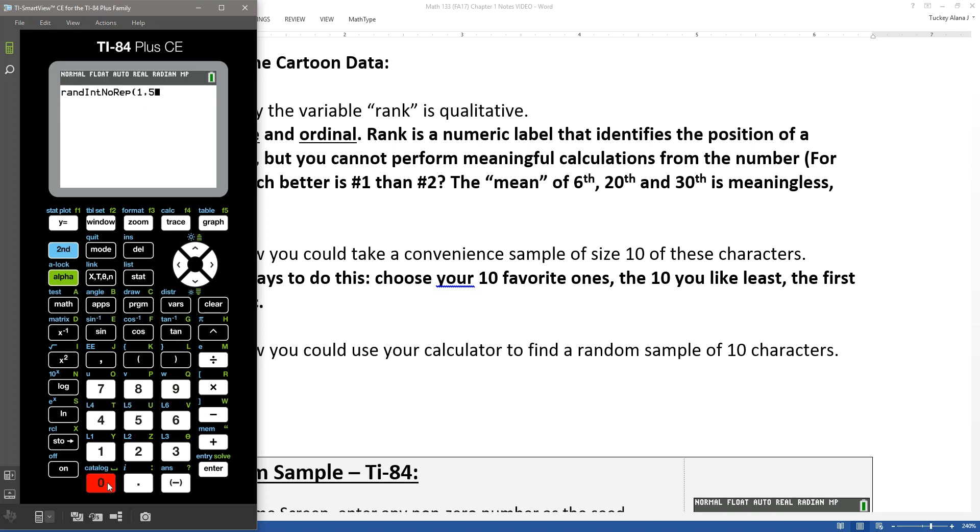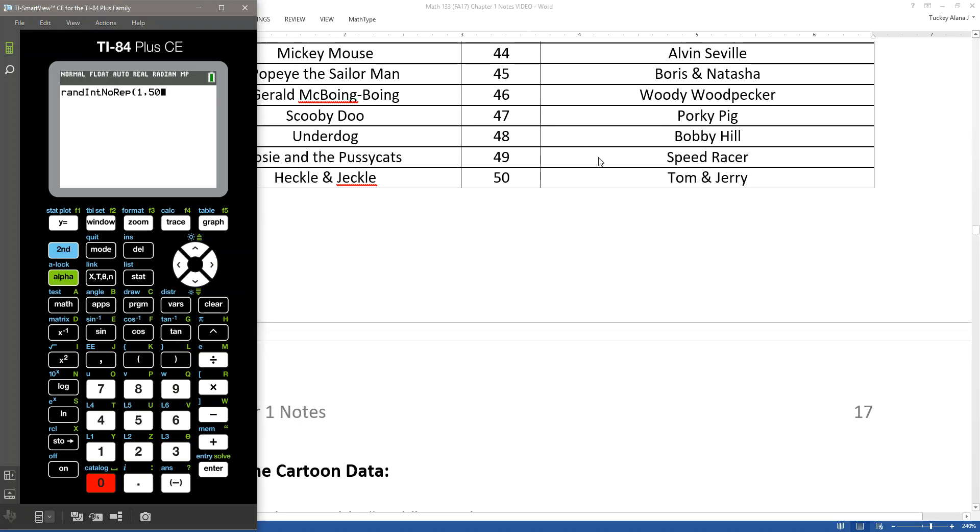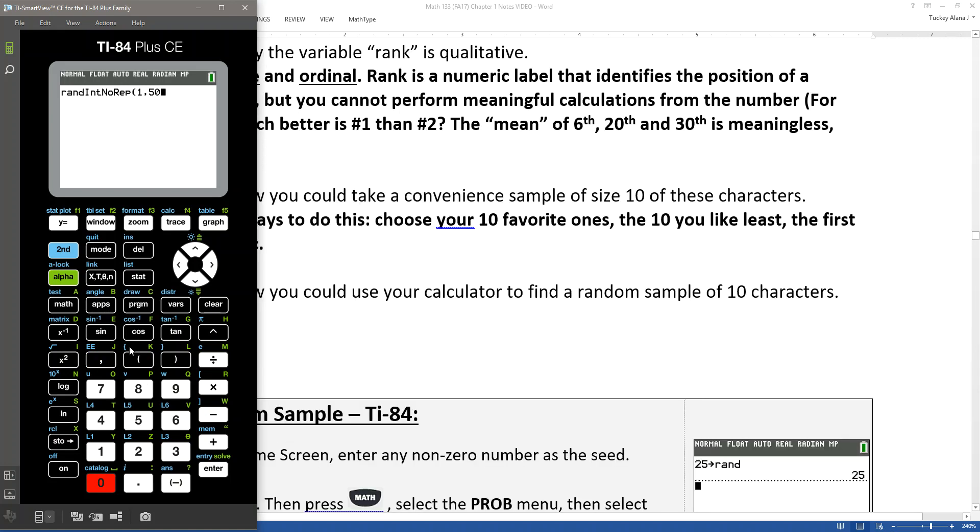And then my highest number was 50 because there are 50 possible, with Tom and Jerry being 50. And then I want to choose a random sample of size 10. On the new calculators you can actually put comma 10 right here. The old calculators you cannot do that. I'll show you that in a minute. RAND no repeat, 1 comma 50 comma 10, and then I press enter.